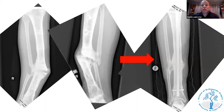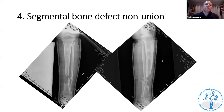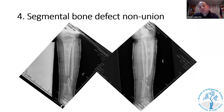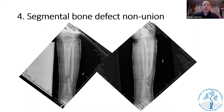The segmental bone defect non-union is not really a non-union because one should never have expected it to unite — osteoblasts and osteocytes don't jump. When you have a bone defect you need to reconstruct it. Occasionally patients present with untreated bone defects — referred to as segmental bone defect non-union — and you follow the same treatment algorithm as for treating a bone defect, following the reconstructive ladder of the lower limb.